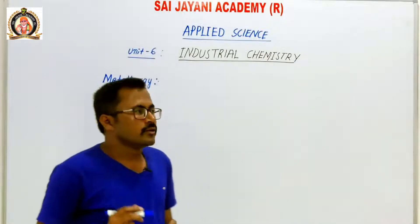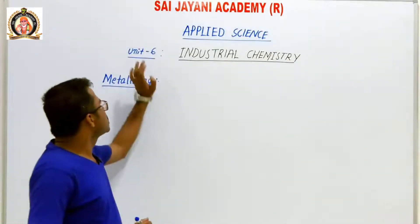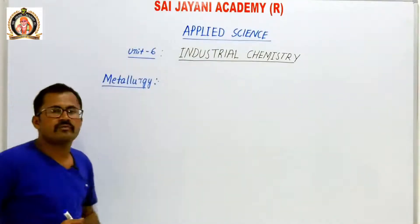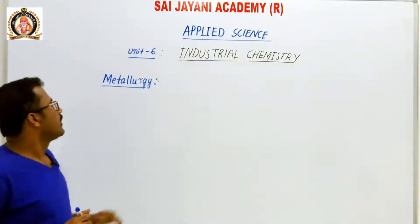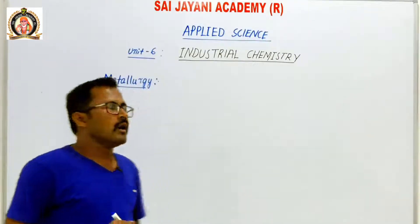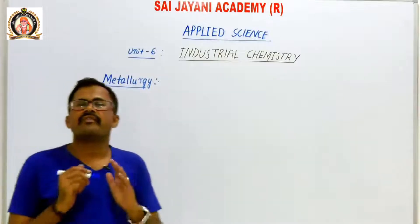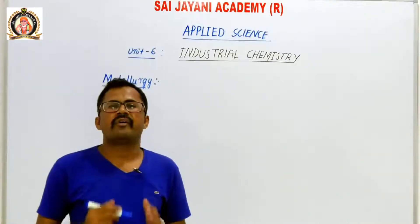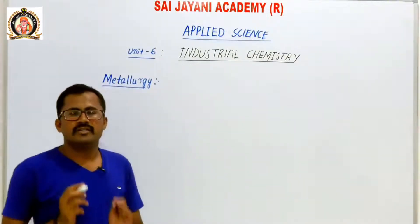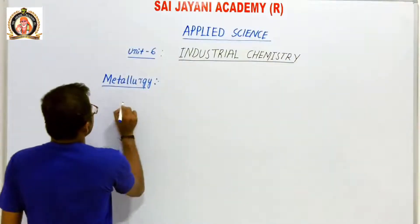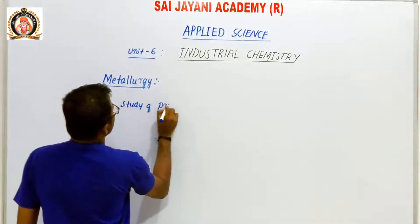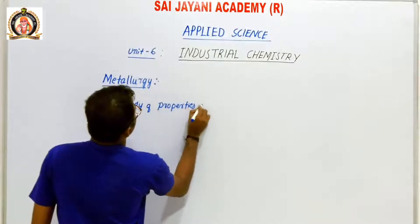Hi friends, welcome to Saigeni Academy. Next, Applied Science — in Industrial Chemistry, the first topic is Metallurgy. Metallurgy is the process of extraction of metal from its ores, or the study of properties of a material, its composition and manufacturing process. Metallurgy is a branch of engineering or technology which deals with the study of properties of metals.